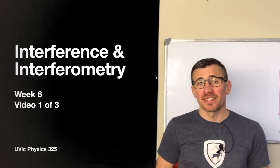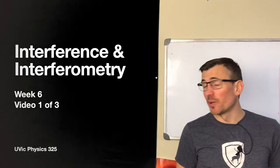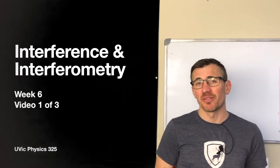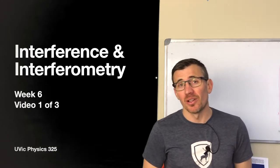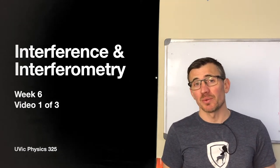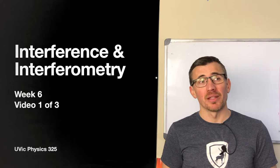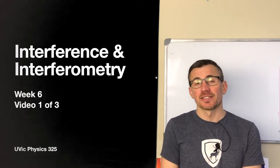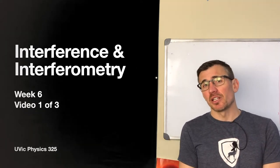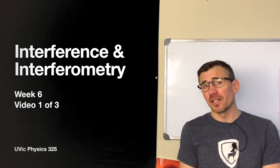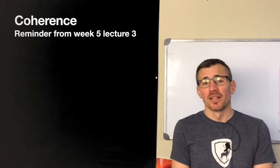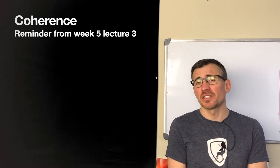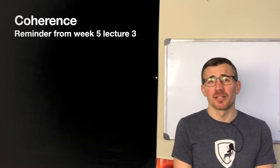Welcome back to week six. After a nice reading break, we're back at it for Physics 325, and we're going to continue along the lines that we were exploring last week, namely the combination of several beams and coherence. Today we're going to use coherence to talk about interferometry and interference as a general phenomenon. We'll start with this idea of coherence, just a refresher from what we were studying last week.